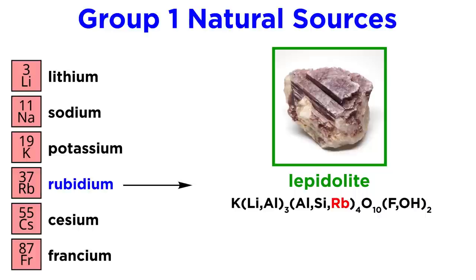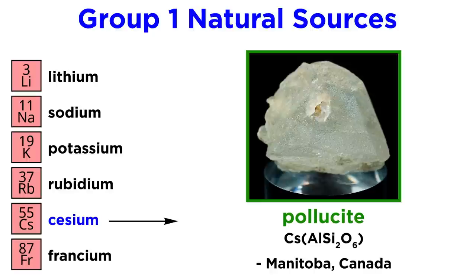Rubidium is found in the ore lepidolite with this complicated structure, where a small amount of potassium is replaced by rubidium. This is found primarily in Brazil, Russia, the United States, Canada, and Madagascar.